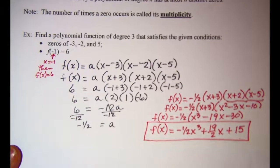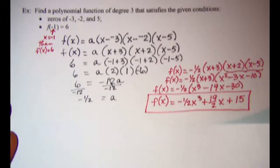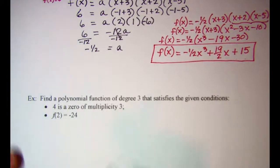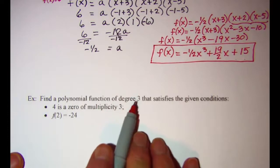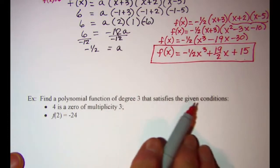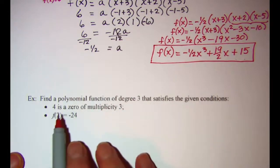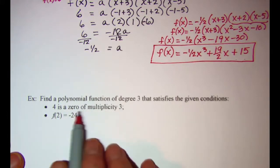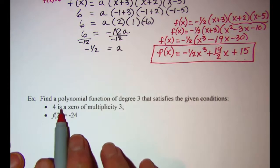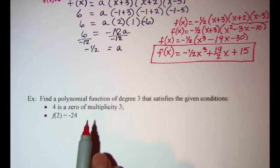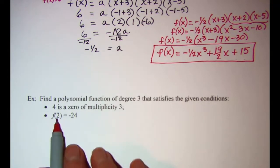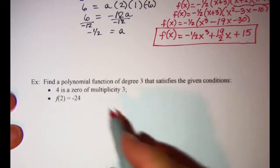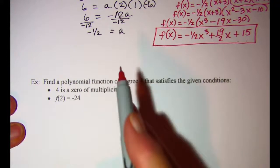Let's do another one. We're asked to find a polynomial function of degree 3 that satisfies the given conditions. 4 is a zero of multiplicity 3, meaning that 4 occurs 3 times as a zero. We're also told that f of 2 equals negative 24. We'll approach this just like the previous problem.